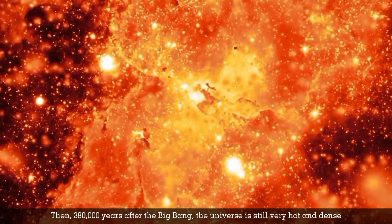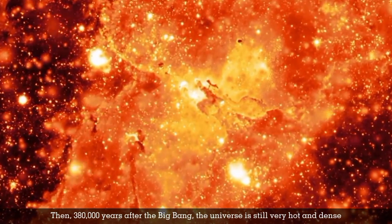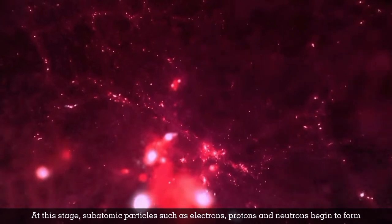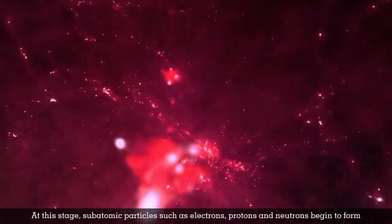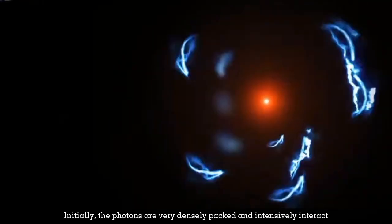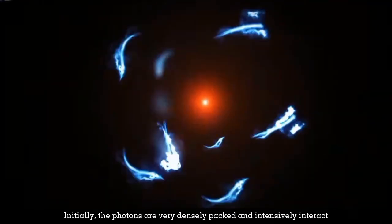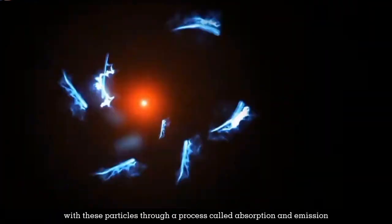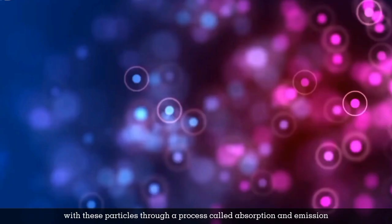Then, 380,000 years after the Big Bang, the universe is still very hot and dense. At this stage, subatomic particles such as electrons, protons and neutrons begin to form. Initially, the photons are very densely packed and intensively interact with these particles through a process called absorption and emission.